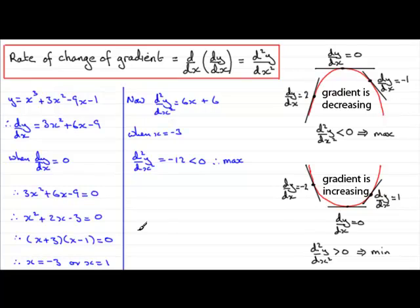When we have x is 1, just put that through. We have d2y by dx squared is going to equal 6 times 1 plus 6 is going to come out at 12, which is clearly a positive number greater than 0. So therefore, we have a min.